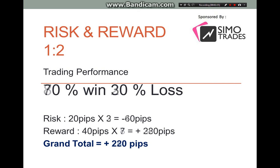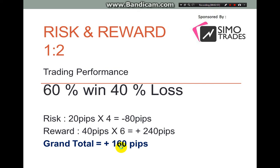Next, let's go to 70/30. With 70% win and 30% loss, maintaining 20 pips for the risk — the 30% loss times three gives us minus 60 pips. The reward is 40 pips times seven due to 70% win, giving us plus 280 pips. After deduction, we get 220 pips.